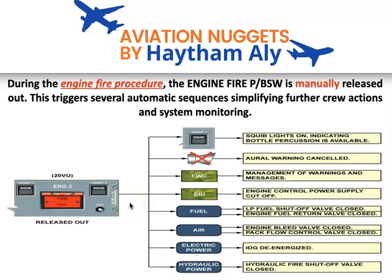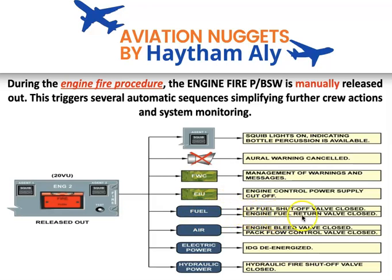Also the fuel return to tank diverter valve — or engine fuel return valve — will close, and no fuel will return from the engine to the wing. This is for the heat management system. So when you release the fire push button: LP fuel shutoff valve closes, and engine fuel return valve closes.